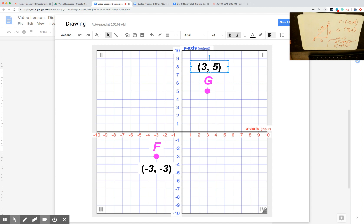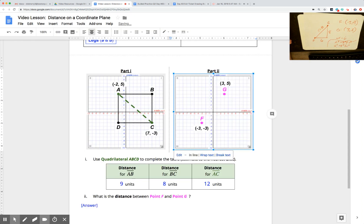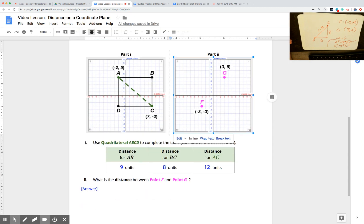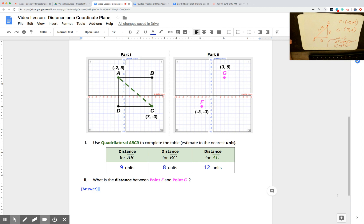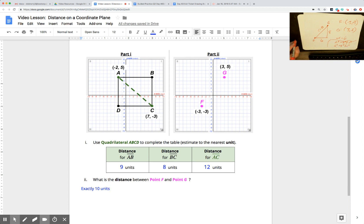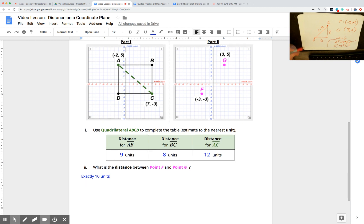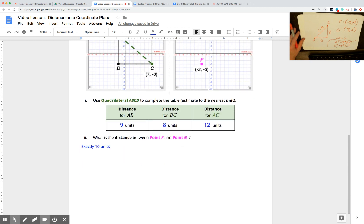So take a quick look at the final problem, make sure our answers are in there correctly. What is the distance between point F and point G? It ended up being exactly 10 units. If you need help as you start moving into the practice problems today, please definitely call us over. Thanks for watching to the end of the video.